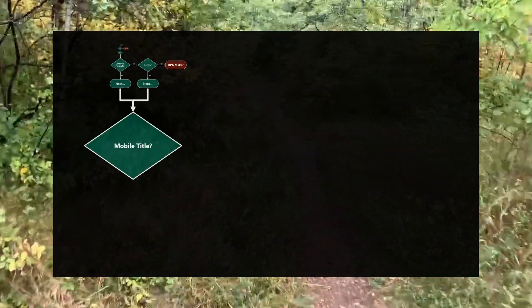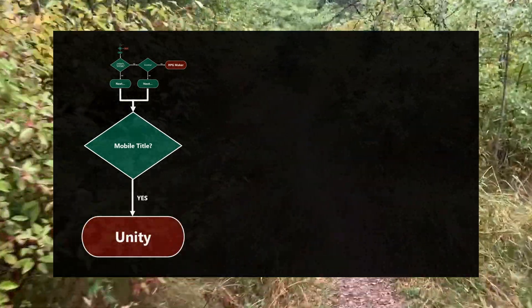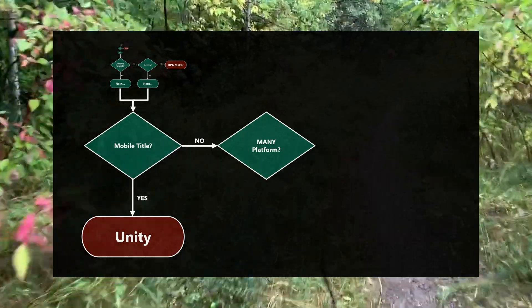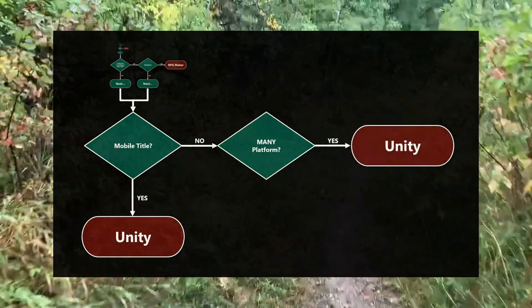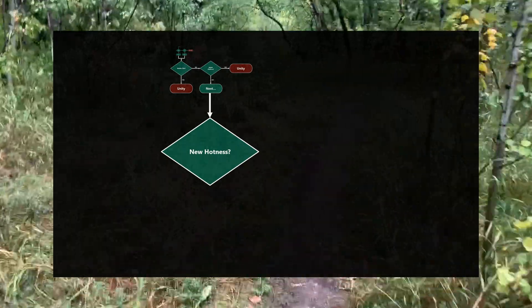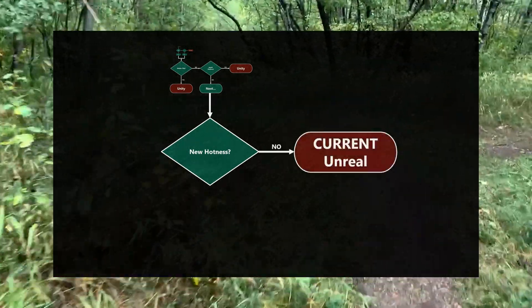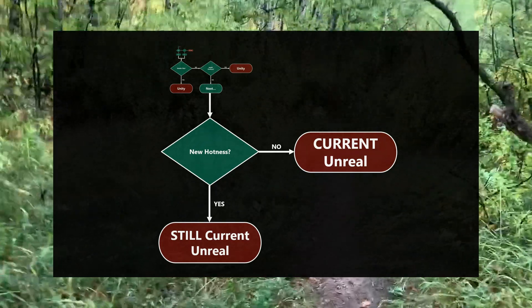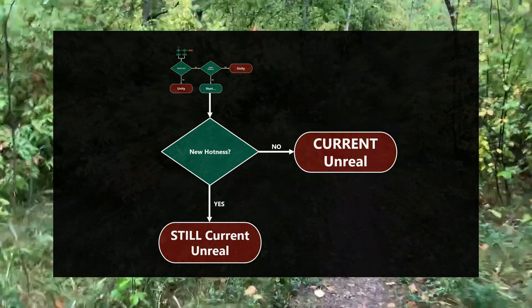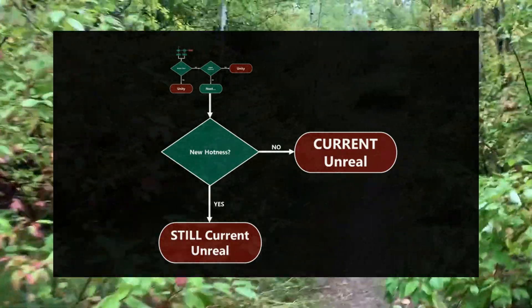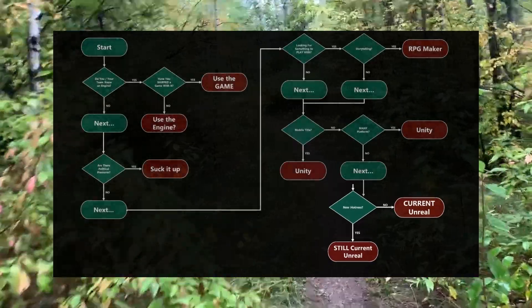Is this a mobile title? If yes, use Unity. If no, is it on a ton of different platforms — beyond the current generation of consoles and PC? If yes, use Unity. Does this game need the new graphical hotness — the coolest, flashiest thing in the entire world? Whether the answer is no or yes, use the current version of Unreal. You do not want to be trapped behind a potential new release that could get delayed and slow your development down as you wait for Epic to finish their latest version of Unreal. So there you go — very simple flowchart.